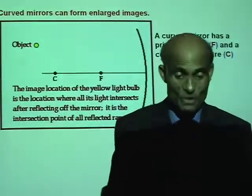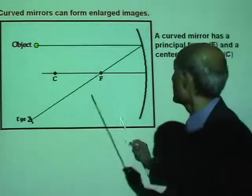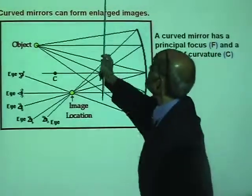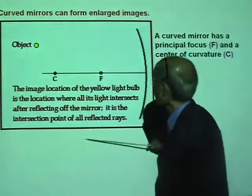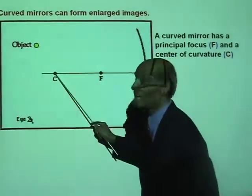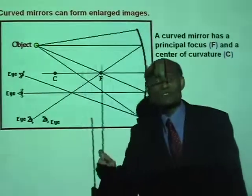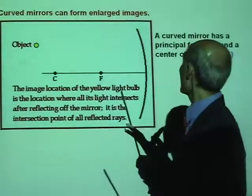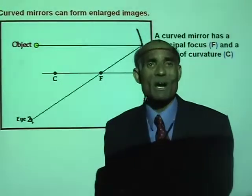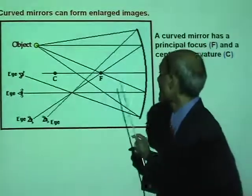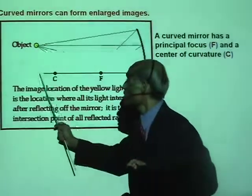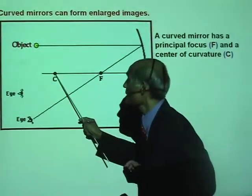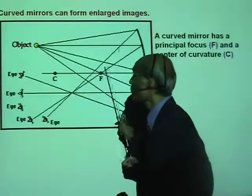This curved mirror is part of a big sphere. If you can construct the whole sphere, the center of that sphere is the center of curvature of the mirror. So I gave you three terms about a curved mirror: it has a principal axis, a center of curvature, and a principal focus.